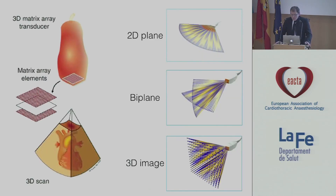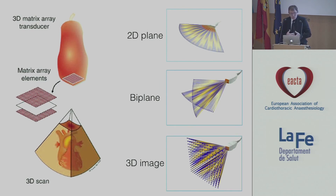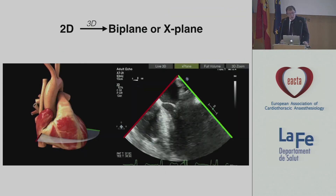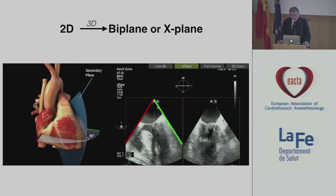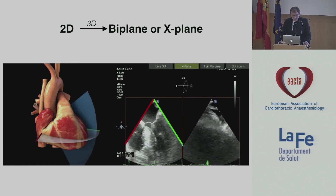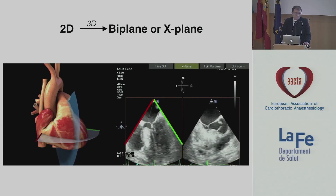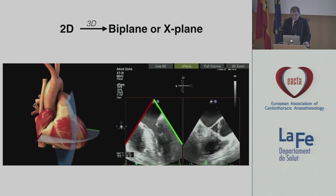Three-dimensional echocardiography uses matrix transducers which contain more than 3,000 elements. This allows us to get beautiful three-dimensional images, but we can also get two-dimensional planes — or even two two-dimensional planes at the same time, which is called biplane or x-plane. Your first image, for example the four-chamber view, can be used as a standard view, and the second view is perpendicular to this, allowing you to scan the whole heart, which is a very useful capability.